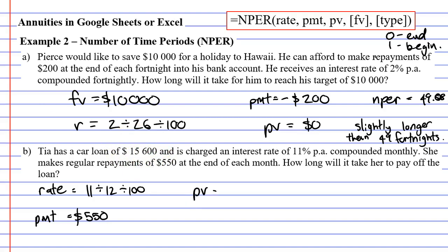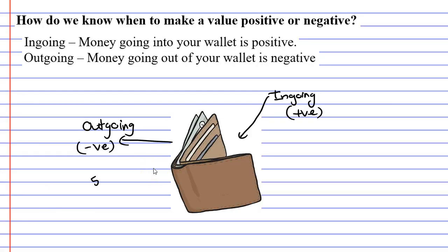We start with a loan of $15,600. We also have FV for future value. The question wants to know how long it will take to pay off the loan. Once the loan is paid off, we owe $0, therefore our future value must be $0. Now we need to double-check if any values are negative. Our repayment is negative. Remember that our repayment of $550 is negative because it's money coming out of our wallet and going into the bank.